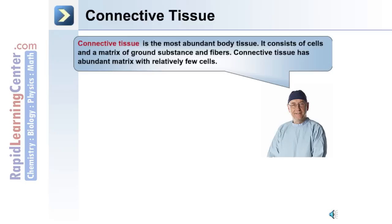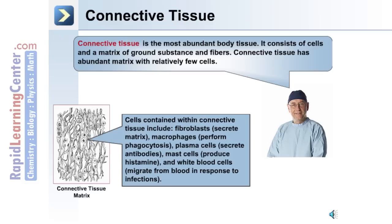Connective tissue is the most abundant body tissue. It consists of cells and a matrix of ground substance, as well as fibers. Connective tissue has abundant matrix with relatively few cells.